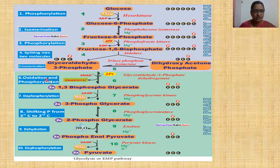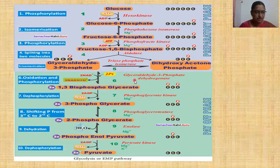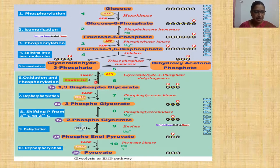The payoff phase includes the sixth reaction: oxidation and phosphorylation. During this phase, oxidation by removal of hydrogen takes place and there is ATP generation (harvest of energy). In the presence of enzyme phosphoglyceraldehyde dehydrogenase, 3-carbon-containing phosphoglyceraldehyde undergoes oxidation, and simultaneously undergoes phosphorylation with inorganic phosphate to produce 1,3-diphosphoglycerate (1,3-bisphosphoglycerate).